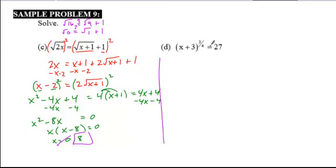For the last problem, problem D, we have this rational power. To solve this, we're going to isolate our expression with the rational power, which is already done. We then undo it by taking the reciprocal power, which is 4/3 instead of 3/4, and now we solve.